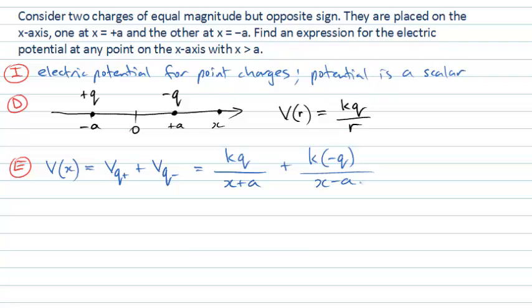And that's pretty much the solution, but we can do some simplification. Let's take out kq as our common factor and what we have in here is 1 over x minus a minus 1 over x minus negative a. We can simplify that further by putting them over a common denominator.